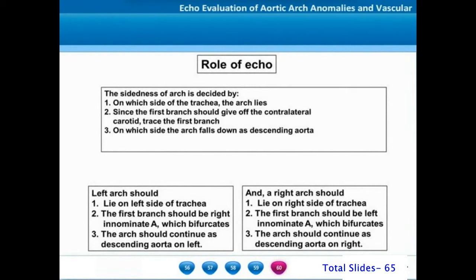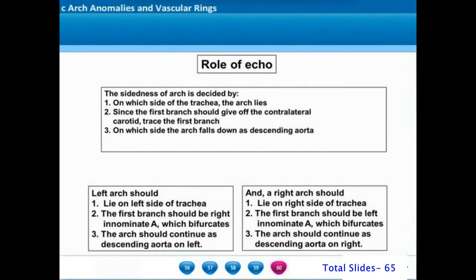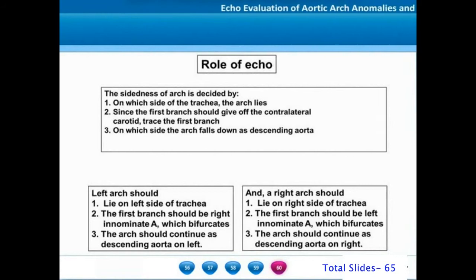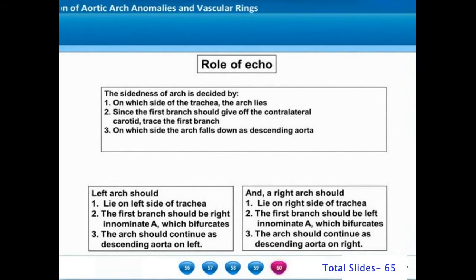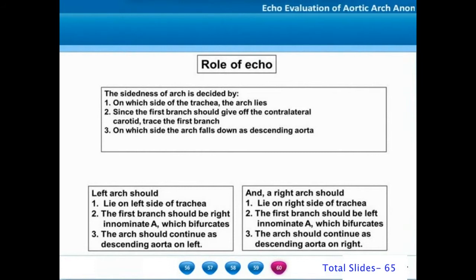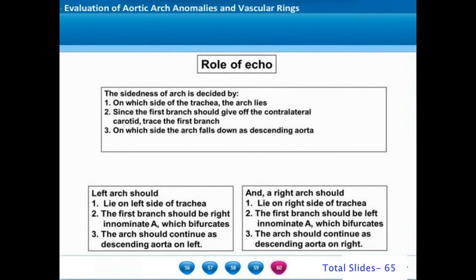Echocardiographic identification of the sidedness of the aortic arch is based on three features: the arch should lie on the right or left side of the tracheal rings; the first arch branch should give off the contralateral carotid artery; and the arch should fall down as the descending thoracic aorta on a suprasternal coronal sweep in a posterior plane. The left aortic arch lies on the left side of the trachea, the first arch branch is the right innominate artery, and the arch continues as the left-sided descending thoracic aorta.